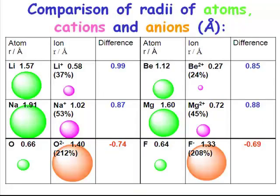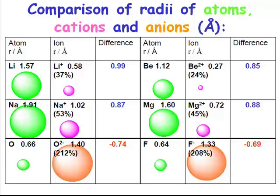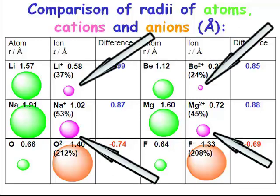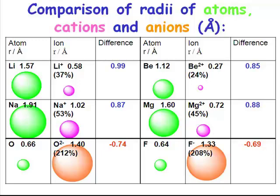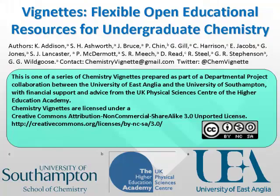Let's have a look at some ionic radii. Neutral atoms are much bigger than their cations. Of course, we're removing that outermost electron when forming a cation. What do certain ions have in common with atomic neon? They have the same number of electrons — they are isoelectronic.